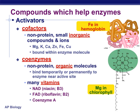Certain compounds that help enzymes are needed for the enzyme to actually be effective. Two of them, called activators, are cofactors and coenzymes. These are compounds that have to bind with the enzymes in order for them to be effective — they activate it and allow the enzyme to function. Cofactors are small inorganic compounds, and coenzymes are organic molecules. Cofactors and coenzymes have specific roles in catalyzing reactions by the way that they bind with the enzyme.